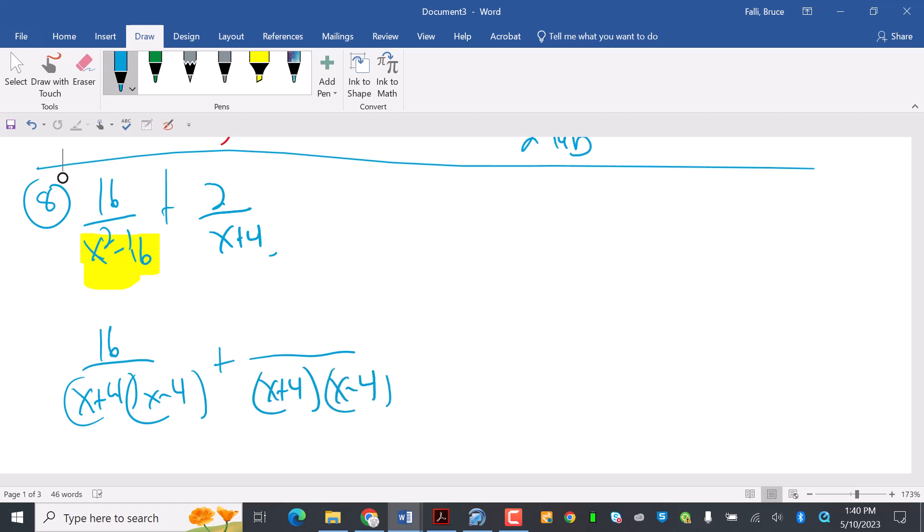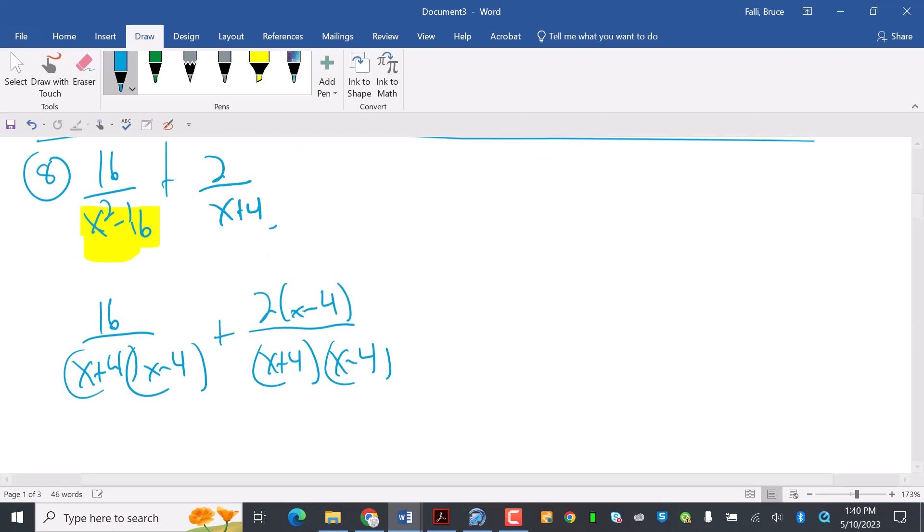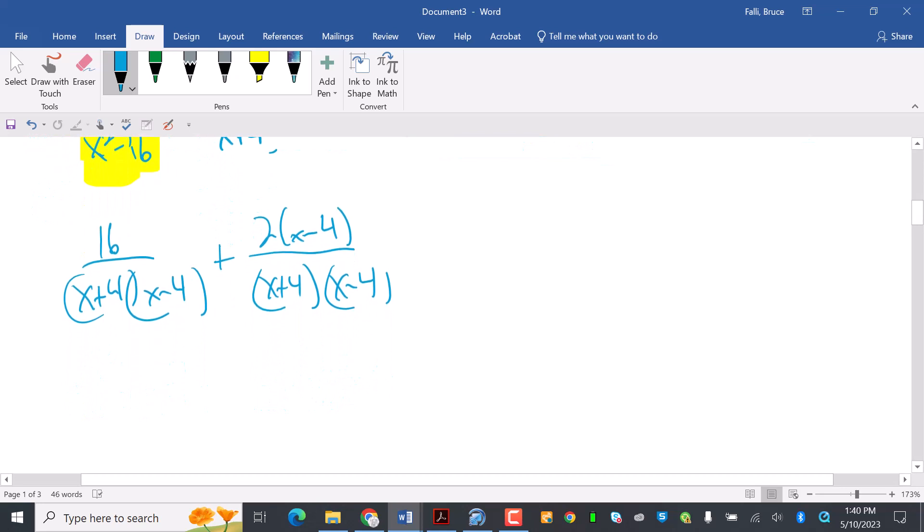Then over here, I know my denominator, this is x plus 4, has to be x plus 4, already got it, times x minus 4. So I have to multiply the top by x minus 4. So that's going to be 2x minus 8.